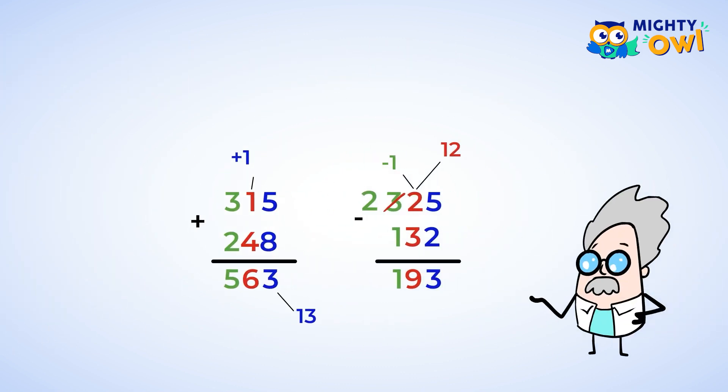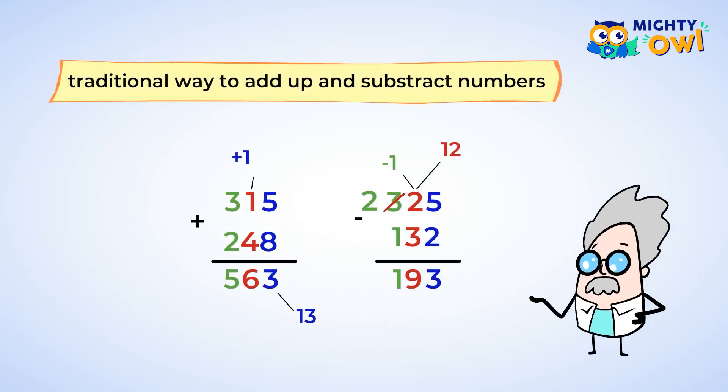So far you know the traditional way to add and subtract numbers. You usually align the numbers vertically, then start with the smallest place value on the right, the ones, and keep adding or subtracting. That works perfectly fine.